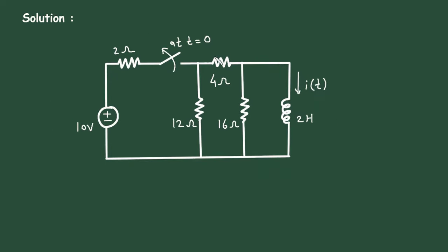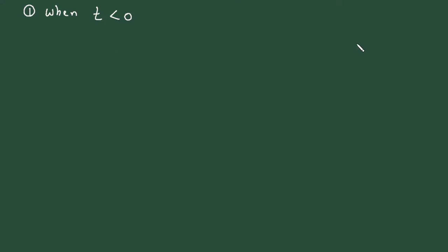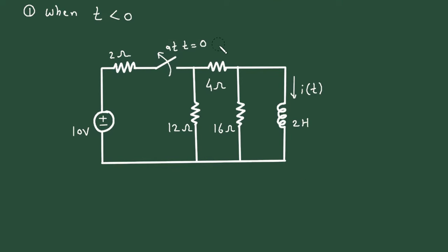Solution: first of all, when the switch is closed — that is when t is less than 0 — the switch will be closed. When the switch is closed, the inductor will act as a short circuit. So here this inductor will act as a short circuit.